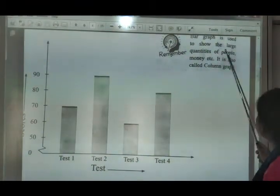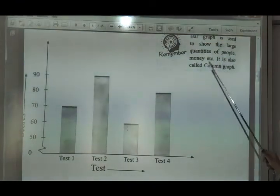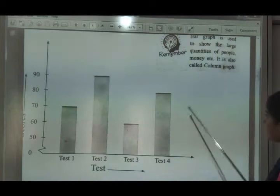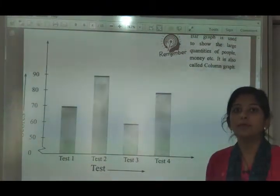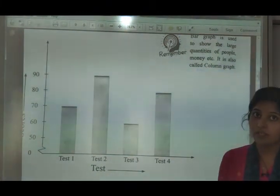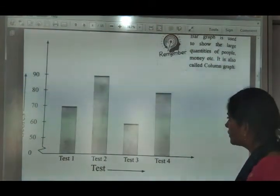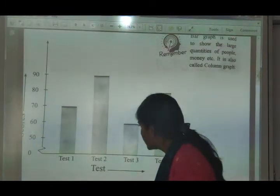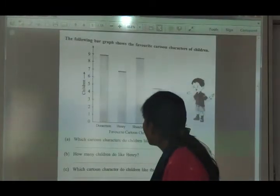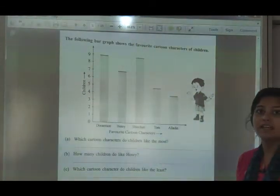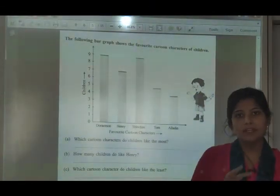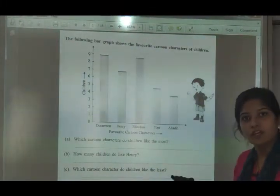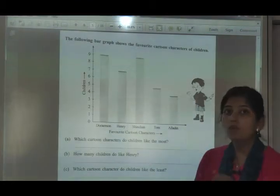A bar graph is used to show large quantities of people, money, or anything. It is also called a column graph. You can draw it horizontally or vertically. Most commonly we use it vertically — in a standing position. The same data that tally marks represents, we represent in the same way using a bar graph.